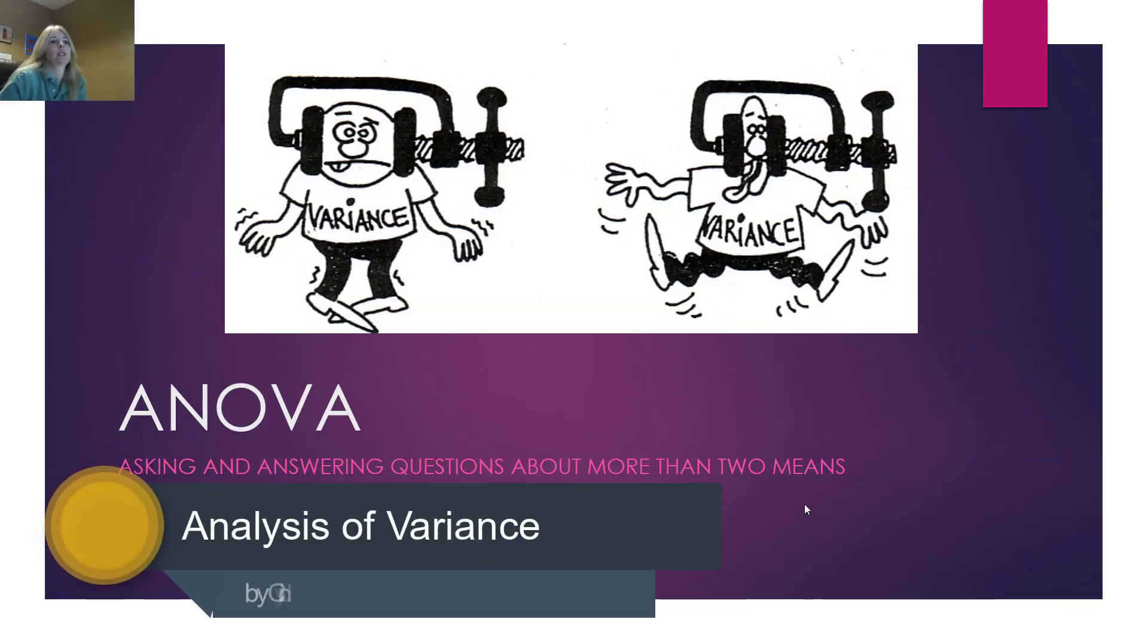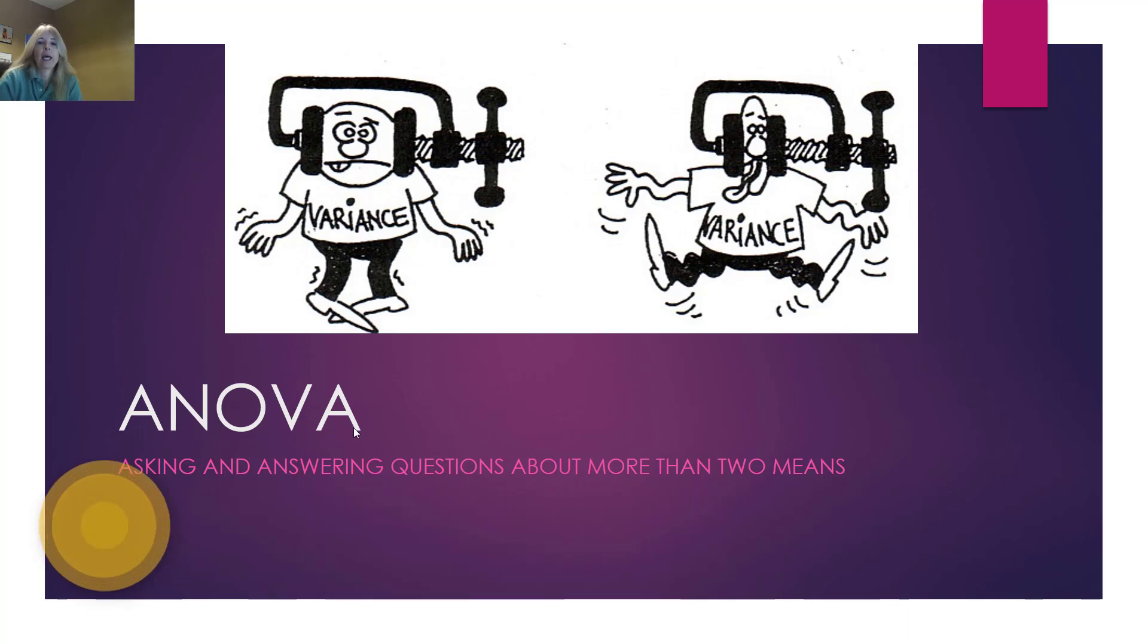In this module, we're going to talk about analysis of variance, or typically shortened to ANOVA. The last thing that you did was actually test between two different means. Well, what if you wanted to test more than two means? And that's what we use ANOVA for.